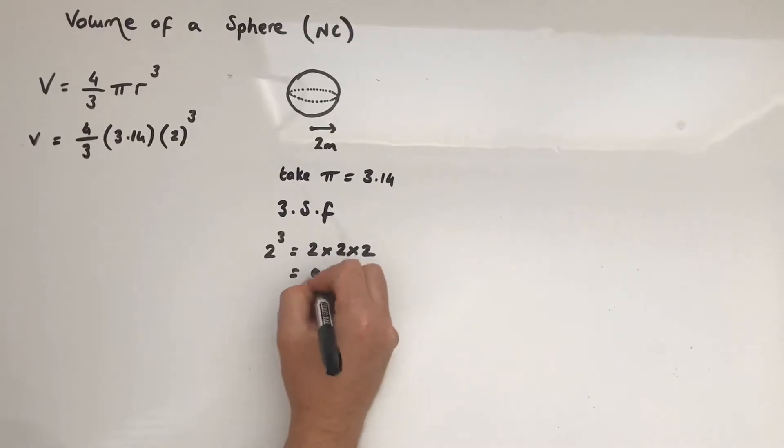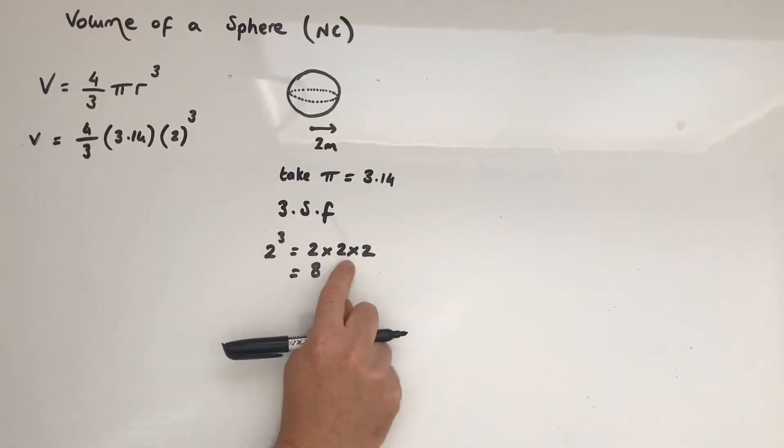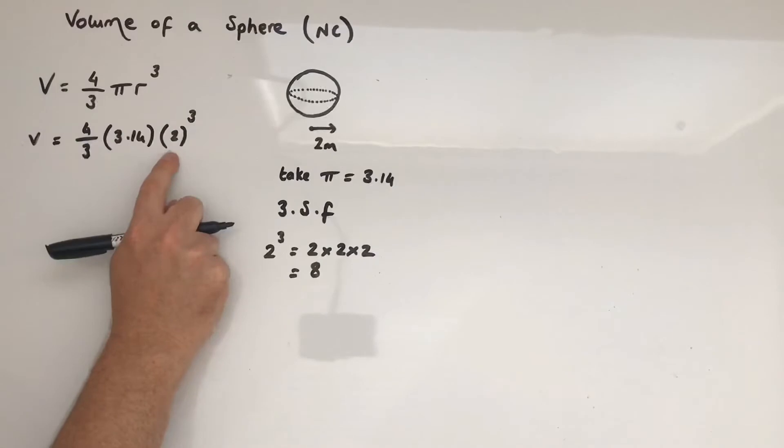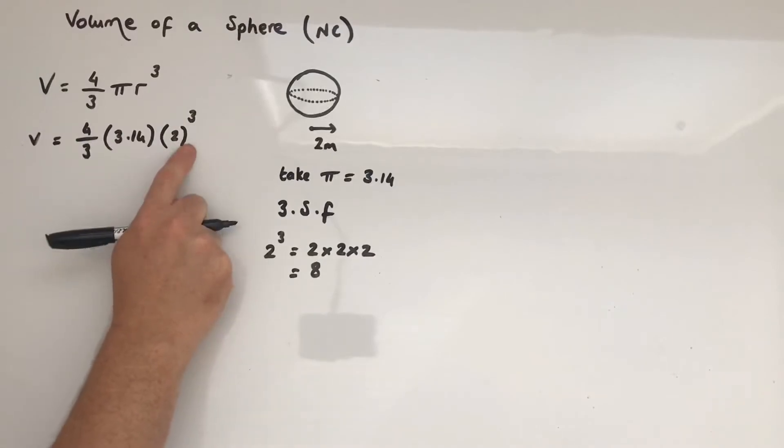Don't write 6 because you see 2 and 3 together.